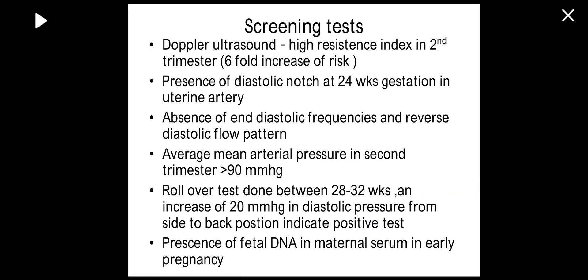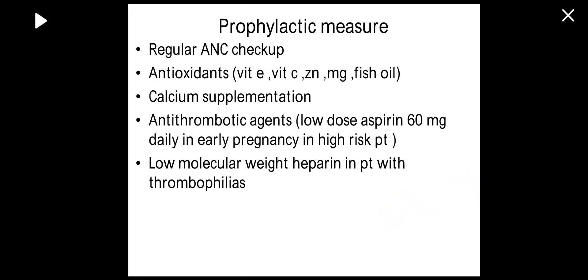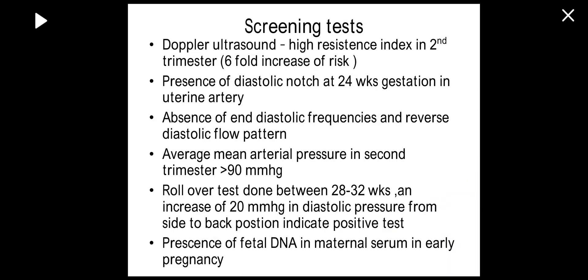Mean arterial pressure more than 90 mmHg is significant. The rollover test is done between 28 to 32 weeks: the patient is turned from lateral to supine position, and a rise in diastolic blood pressure of more than 20 mmHg indicates a positive rollover test, suggesting the renin-angiotensin mechanism and inferior vena cava compression. Presence of cell-free DNA in maternal serum in early pregnancy is another predictor.